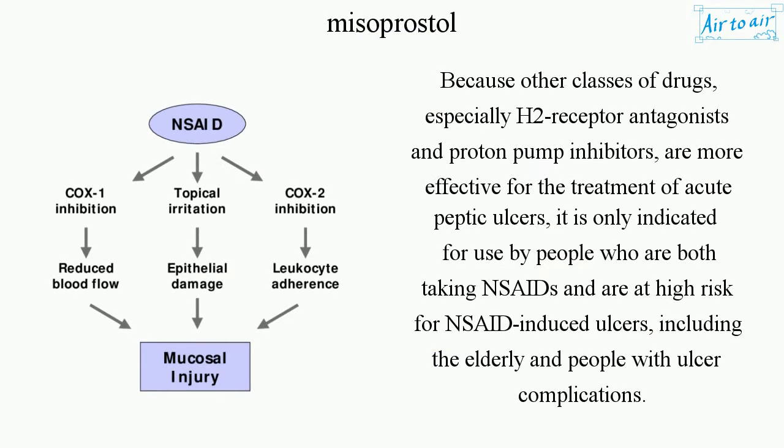Because other classes of drugs, especially H2 receptor antagonists and proton pump inhibitors, are more effective for the treatment of acute peptic ulcers, it is only indicated for use by people who are both taking NSAIDs and are at high risk for NSAID-induced ulcers, including the elderly and people with ulcer complications.